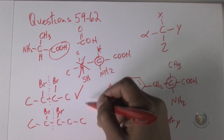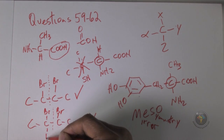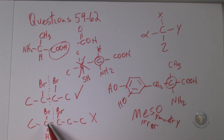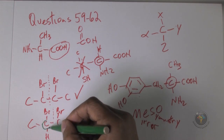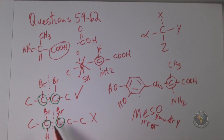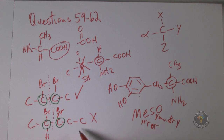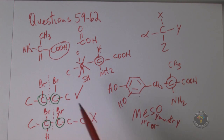For 2,3-dibromopentane, if you draw a line between the bromines and fold the molecule, the extra carbon gets in the way — so they will not be mirror images of each other. The butane compound has a mirror of symmetry, making it a meso compound. The pentane compound has no mirror symmetry — it's not meso, and since it has chiral carbons, it has non-superimposable mirror images: enantiomers, or optical isomers.